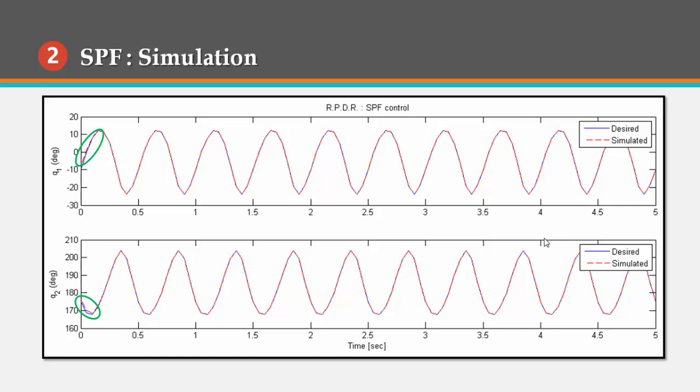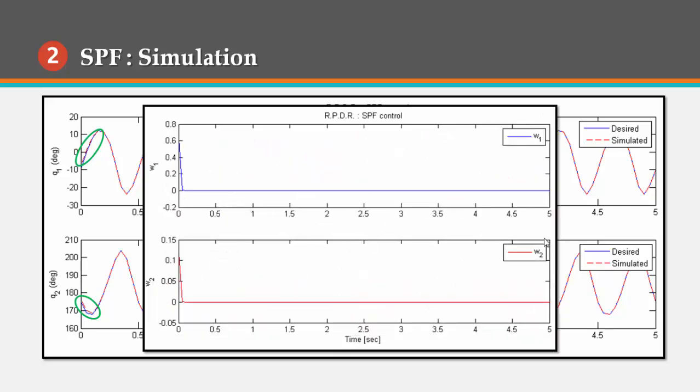Meanwhile, the constraint violation represented by w also goes rapidly to 0 as t is going to infinity.